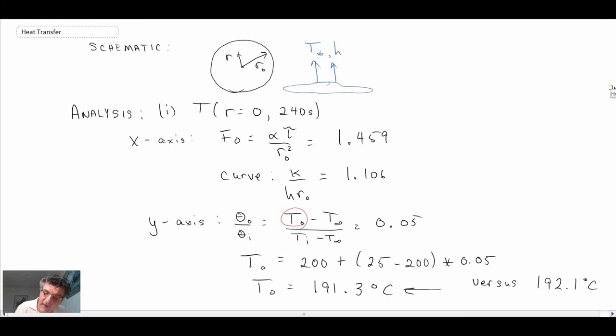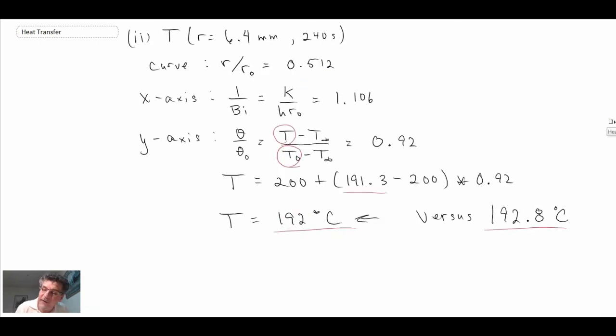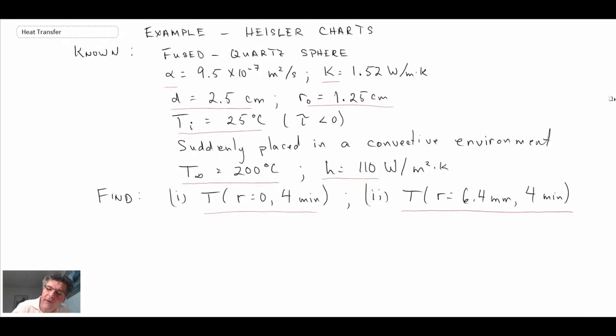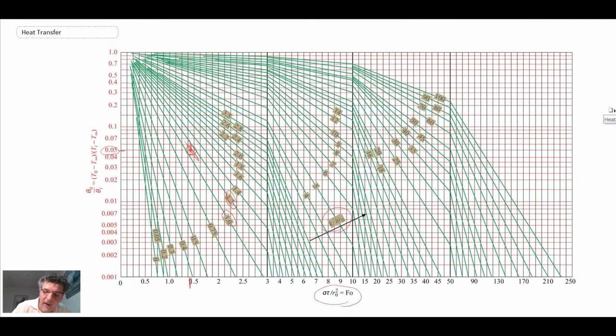The approximate technique was slightly higher than what we got from the Heisler charts for the centerline temperature, and so here we're finding the exact same trends. So anyways, those results are pretty close. You can see the Heisler chart is relatively quick. I didn't use a ruler here, and if you had used a ruler it would be a little bit more accurate.